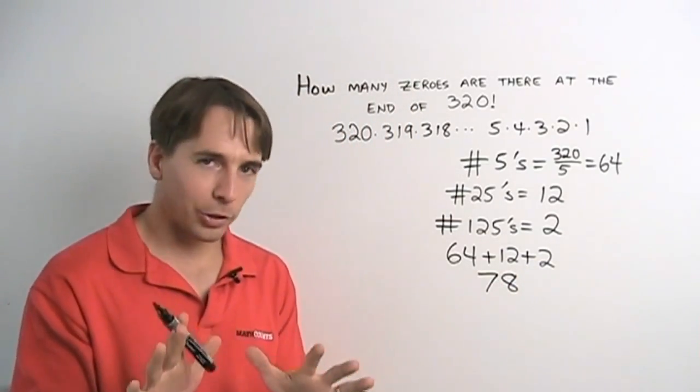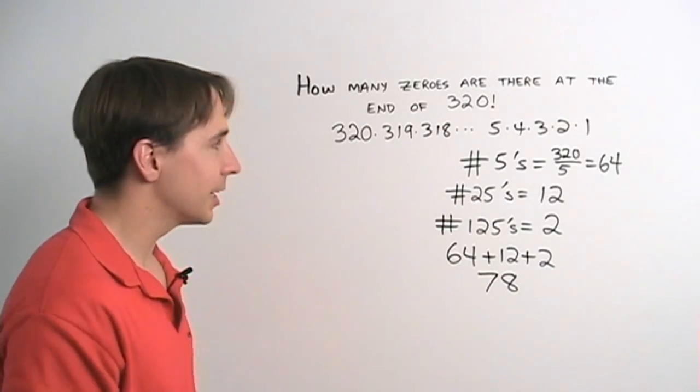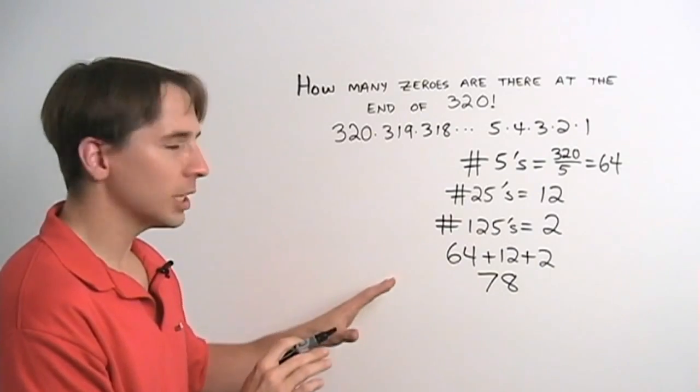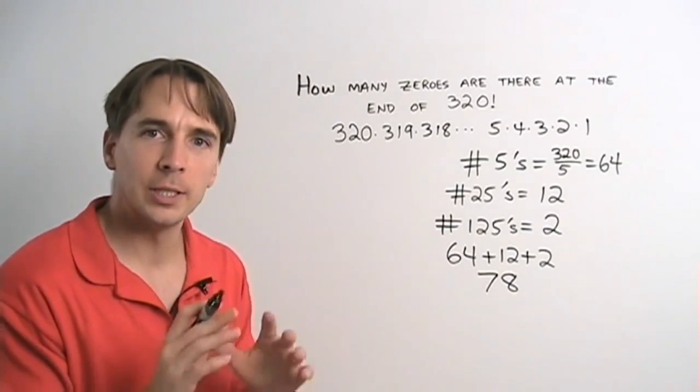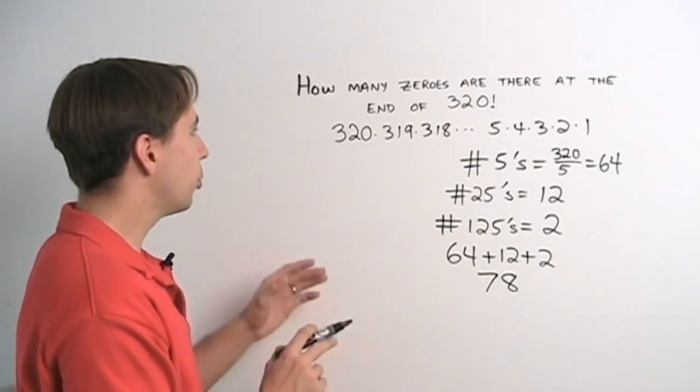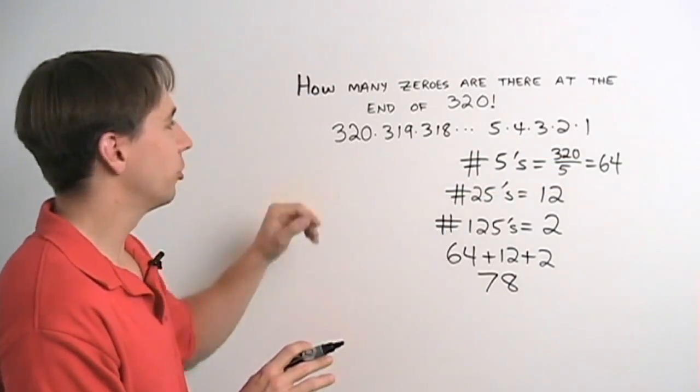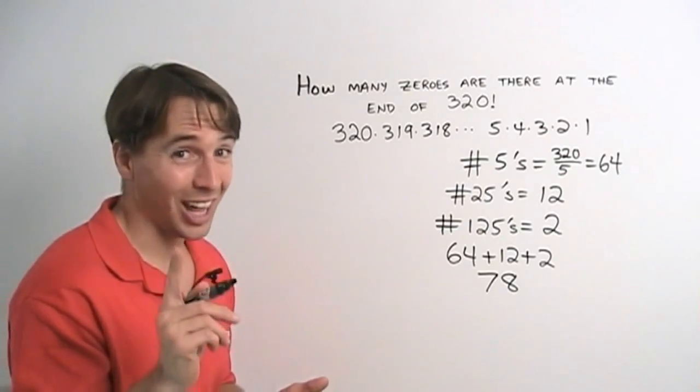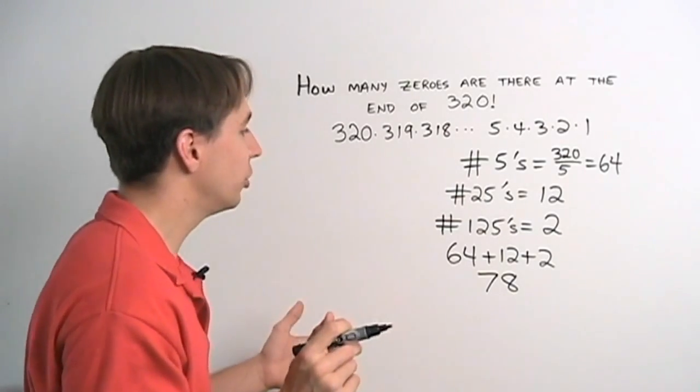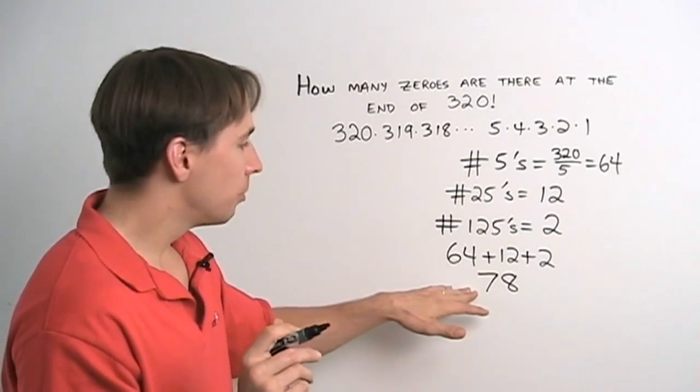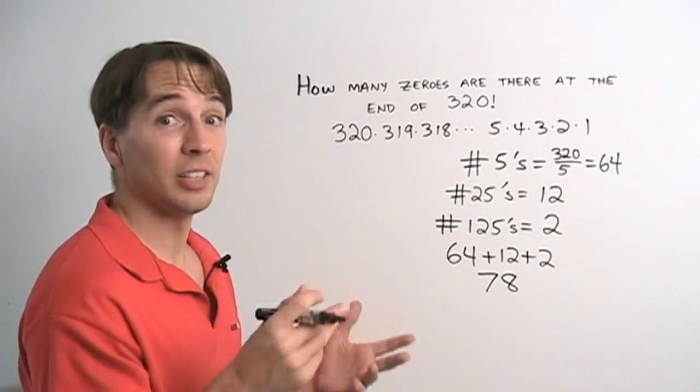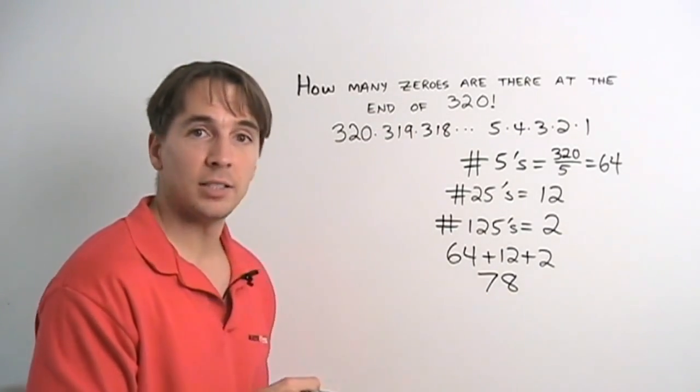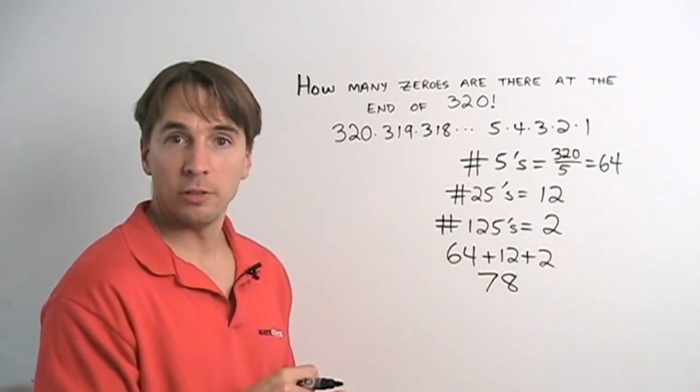Now, we've tricked ourselves a couple times already. So before we scribble down 78 and move on to the next problem, we stop and think and make sure, okay, we do have 78 factors of 5. We're pretty confident of that. Do we have enough 2s to make the 10s? Fortunately, we can answer that really quick. 320 numbers in the list. Every other one is even. So that means there are 160 even numbers. That's a lot of 2s. It's at least 160 2s. So we can pair off enough 2s with these 78 5s to make 78 10s. And 78 10s give us 78 zeros at the end of 320 factorial.